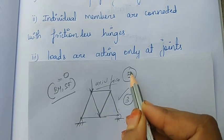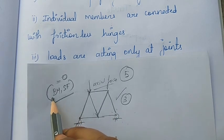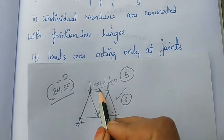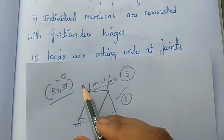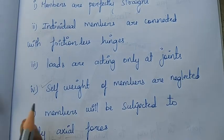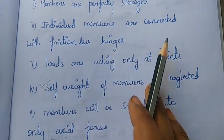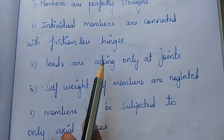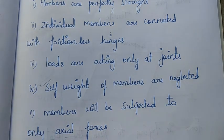This is the fifth and most important point: members are subjected to only axial forces. The bending moment and shear force are zero. The axial force has two types — compression and tension. Members will be under compression or tension. To recap all assumptions: (1) members are perfectly straight, (2) members are connected with frictionless hinges, (3) loads act only at joints, (4) self-weight of members is neglected, (5) members are subjected to only axial forces — with compression and tension, and bending moment and shear force equal to zero.